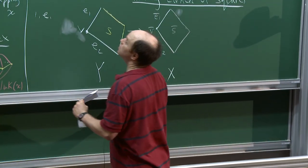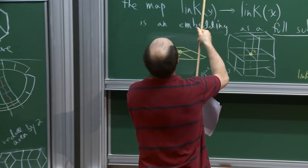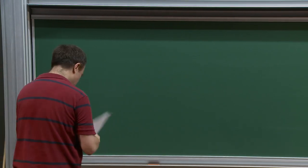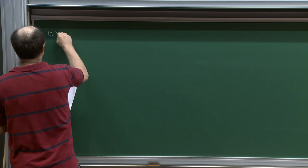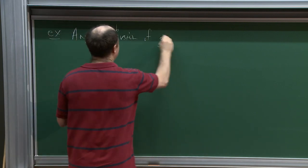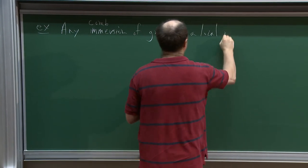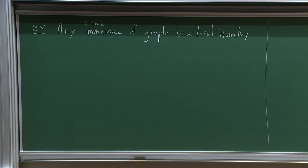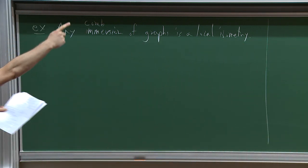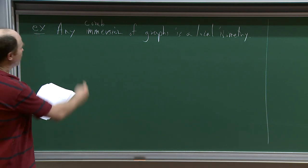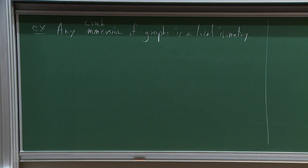A quick example: any combinatorial immersion of graphs is a local isometry. In some sense, we're always generalizing things that work for graphs. When you have a local isometry of graphs, people usually just call it an immersion. Well, there are no squares around for graphs, so that condition is automatically satisfied. There will be more discussion of local isometries in the exercises.